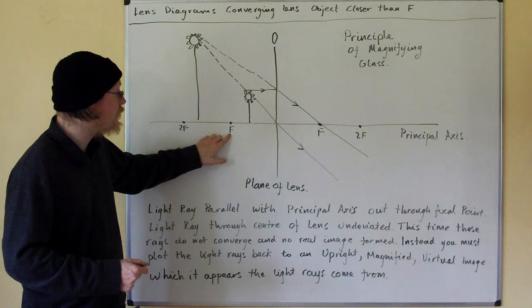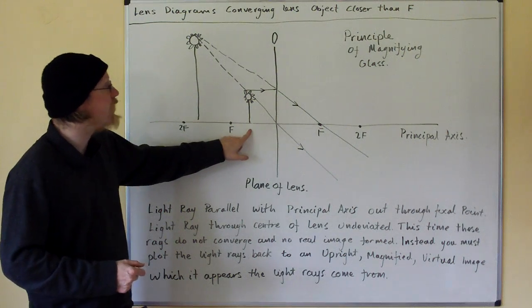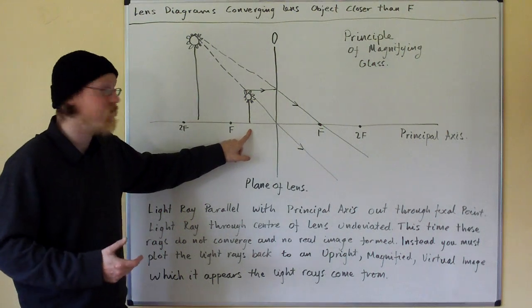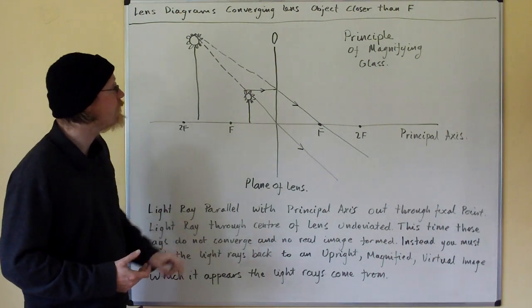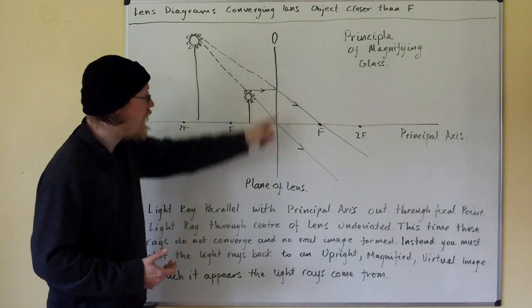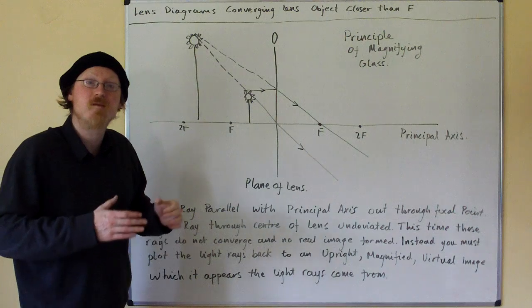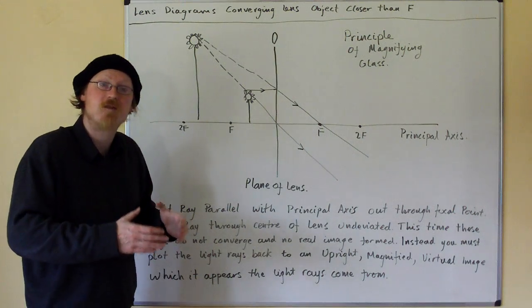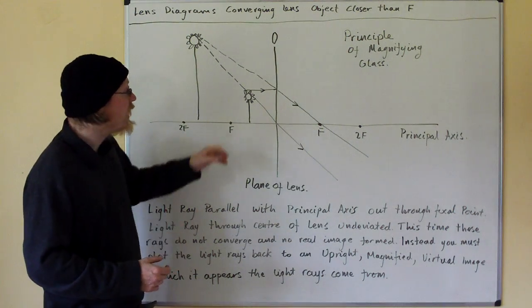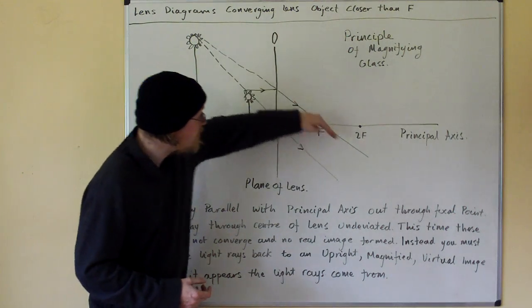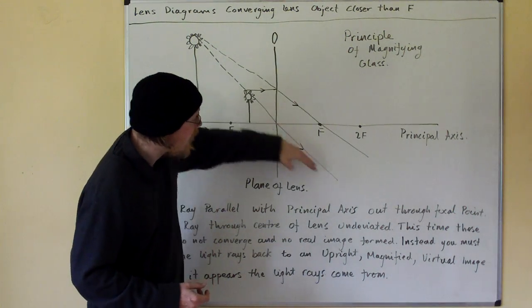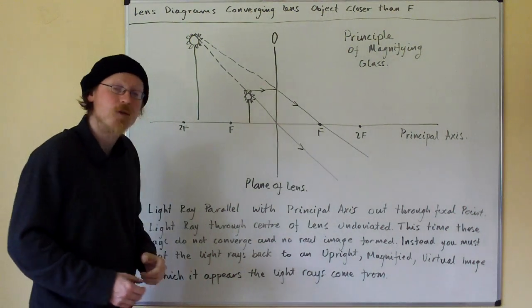We're closer than the focal point — our object is closer than the focal point — so the converging lens is not able to converge the light rays coming from it, and instead these two light rays are spreading out.